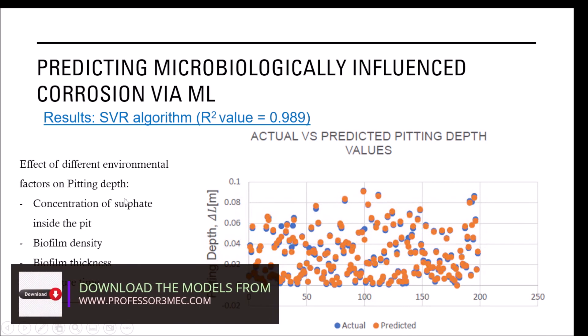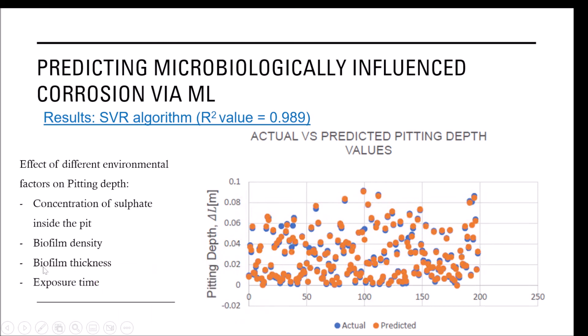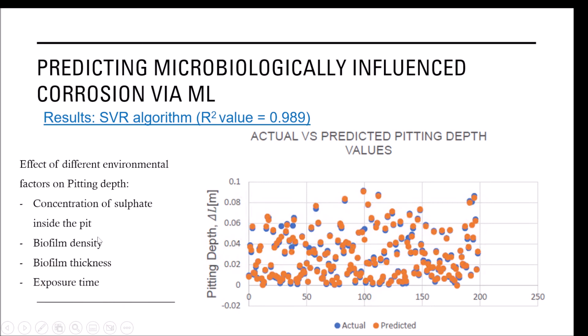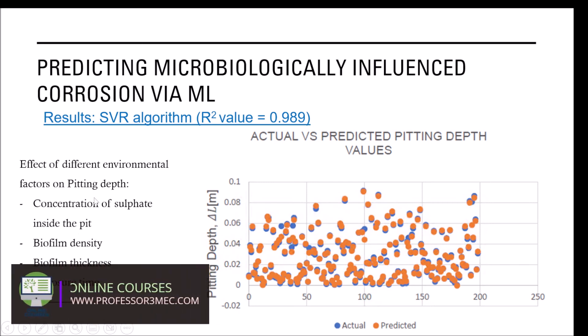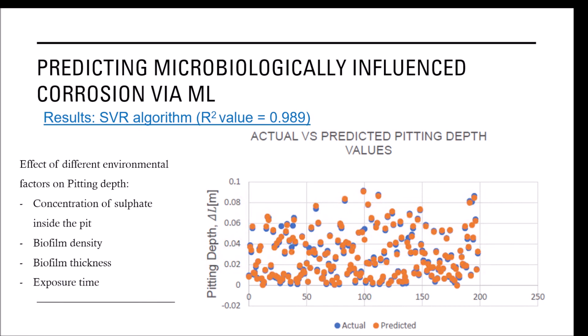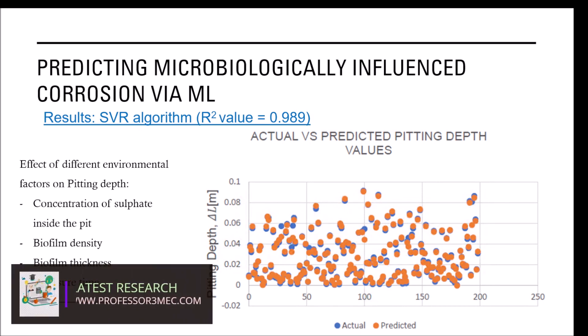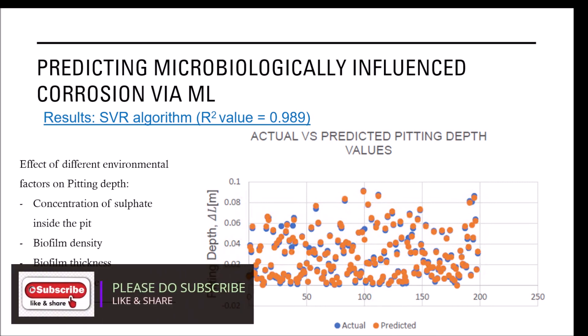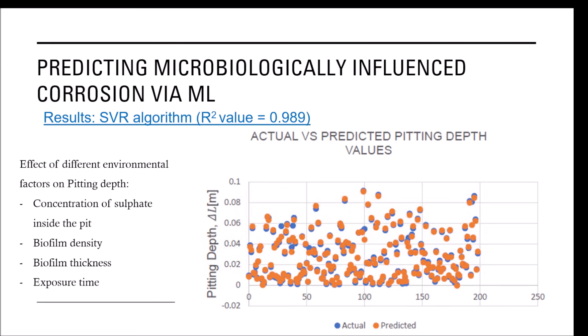The effect of different environmental factors on pitting depth were considered. The first one was the concentration of sulfate inside the pit, biofilm density and biofilm thickness, and also the exposure time. In this case the results which are on the screen right now are based on these factors and how they influence the pitting depth. There were thousands of data points but we have only shown you some of those which are after testing. You can see there's a good overlap between the actual data and the predicted data of the pitting depth for different variables. So this way we were able to train support vector regression and we definitely were able to predict the MIC model using this.